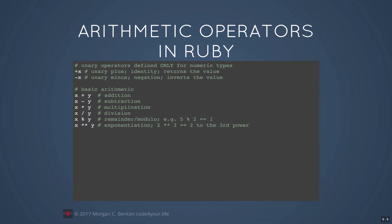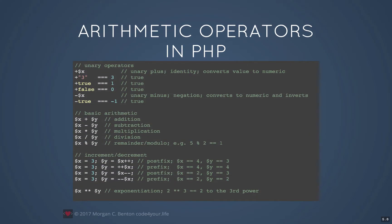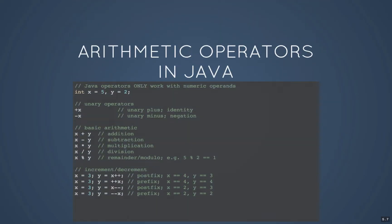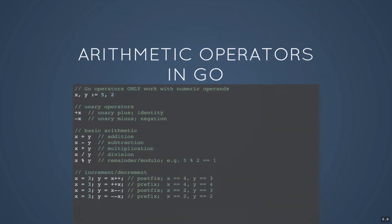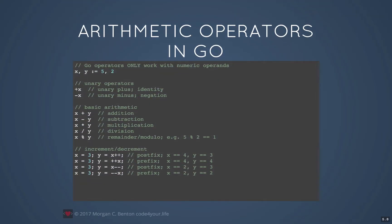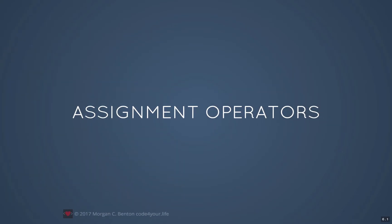Ruby is pretty similar to the ones before and doesn't bear much special recognition. PHP is also fairly similar to the other languages that you've seen. Java is very similar as well, and Go is also similar. So let's move on to assignment operators.